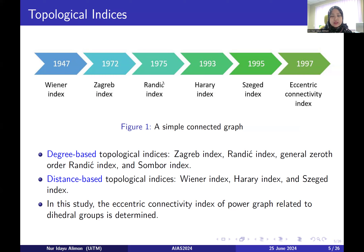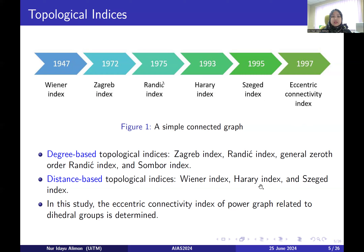For example, recently Gutman introduced a new topological index called the Sombor Index. Topological indices can be divided into two types: degree-based and distance-based. Some focus only on degree-based, some only on distance-based. For the Eccentric Connectivity Index, the formula contains both degree-based and distance components. We need to know the degree and the distance of the graph in order to compute the Eccentric Connectivity Index. In this study, the Eccentric Connectivity Index of the power graph related to the dihedral groups is determined.